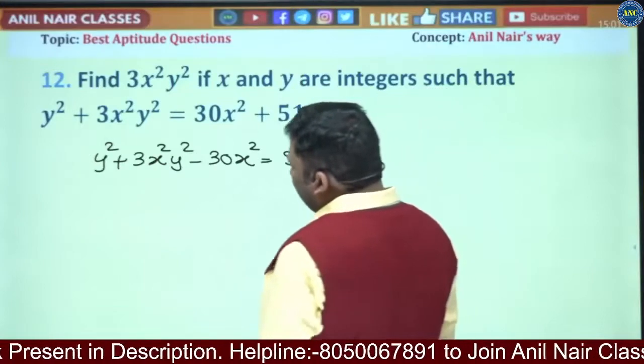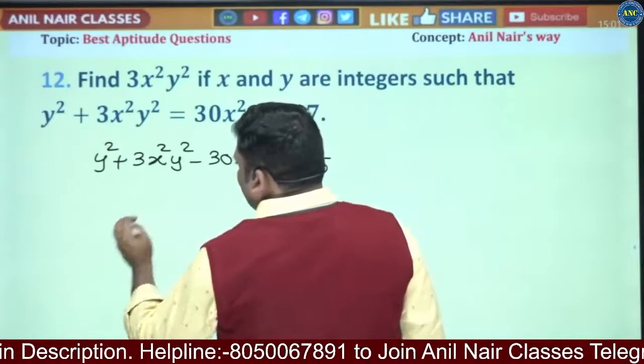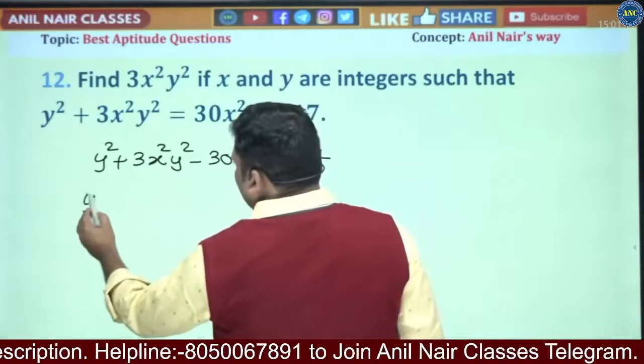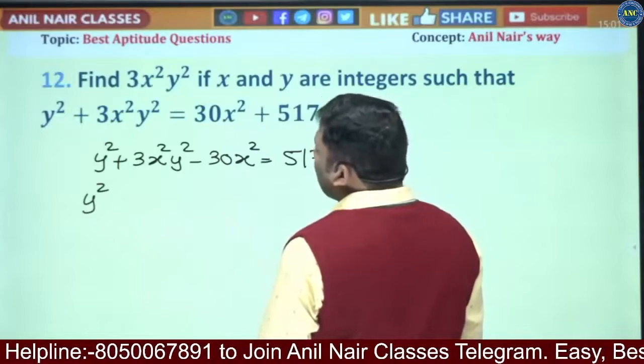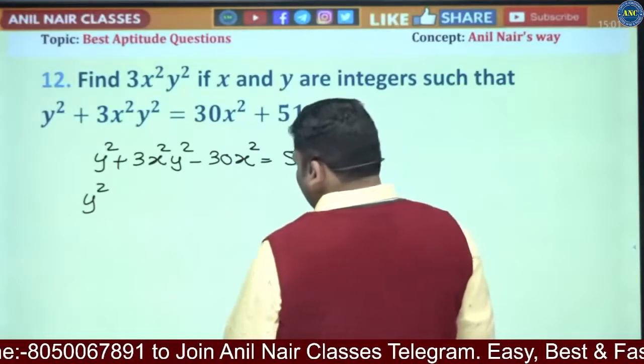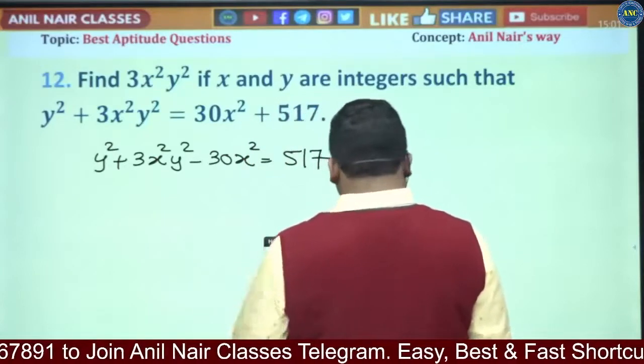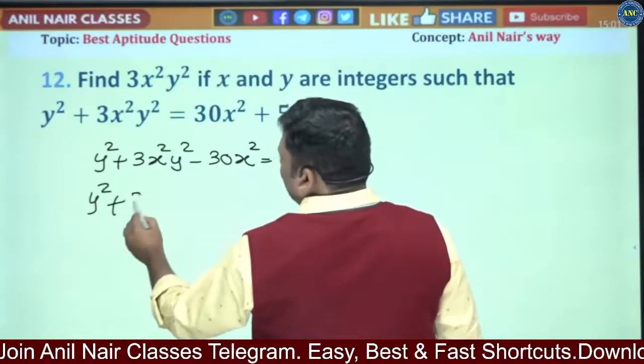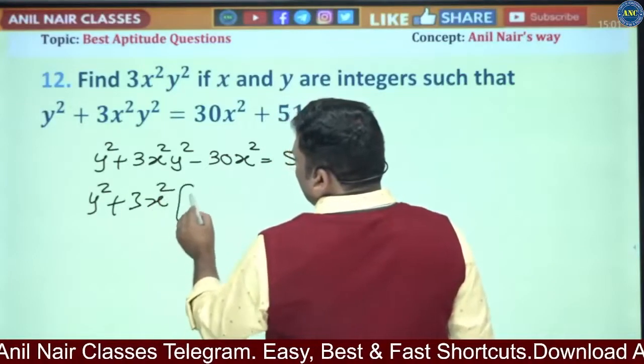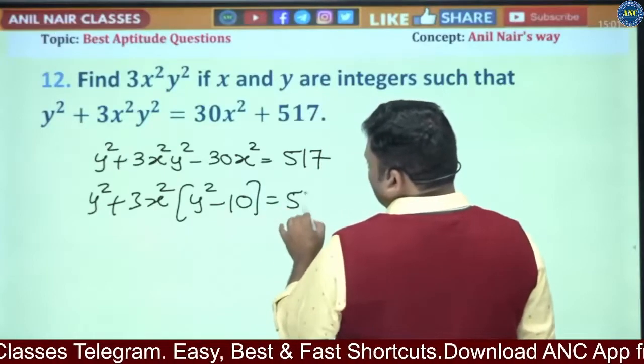What I will do is take y² common. y² + 3x²y². So this is giving me, just by looking at the question, a hint that y² + 3x² common, it is y² - 10 equivalent to 517.